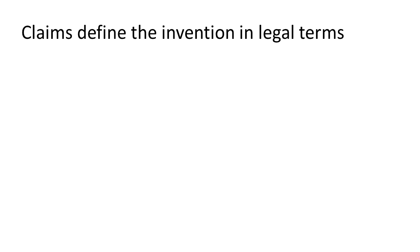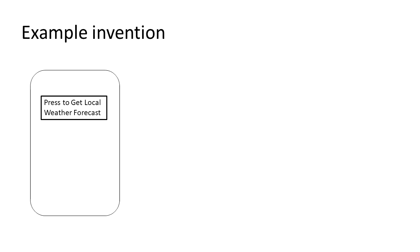Claims define the invention in legal terms, and so it's usually preferable to have the claims worded in terms of structure rather than who interacts with the structure. Let's take a look at a contrived example to help solidify this point. The example invention is getting weather for your location on your phone by pressing a button.